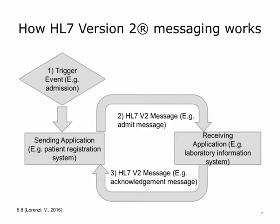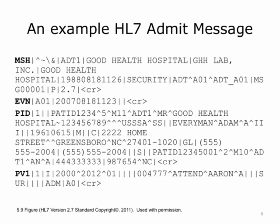A real-world event happens, such as the admission of a patient — we call that a trigger event. This event is recorded on the sending system, which then creates a message based on the HL7 standard and sends it to the receiving system. For example, the admission might be recorded on the patient registration system, and then the message notifying about the admission would be sent to the laboratory information system. The receiving system receives the message and either fully processes it or saves it to a recoverable resource. If it can receive the message successfully, it sends back a positive acknowledgement message; otherwise, it sends back a negative acknowledgement message.